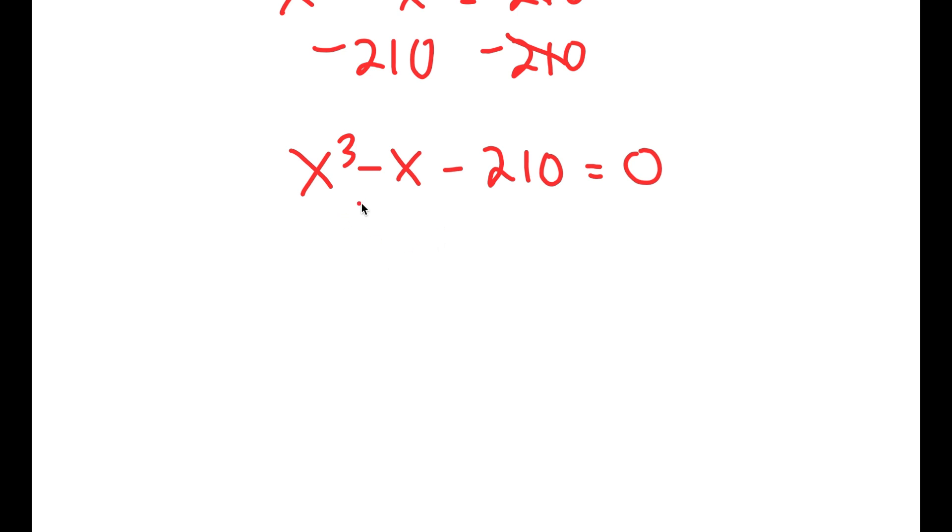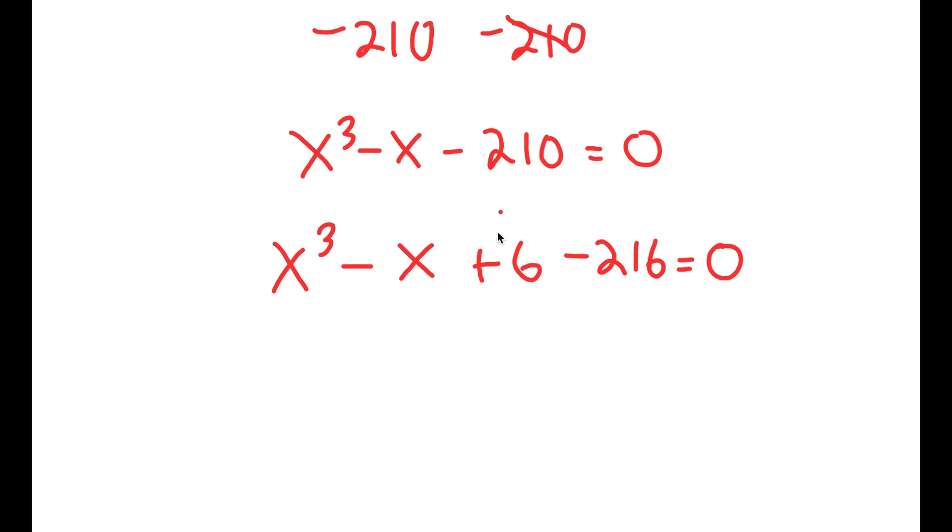Now, from here, I'm going to rewrite this as x to the power of 3 minus x plus 6 minus 216 is equal to 0. So I rewrote negative 210 as 6 minus 216. So now the reason I did this is because I can rewrite this as x to the power of 3 minus 216 minus x plus 6 is equal to 0.